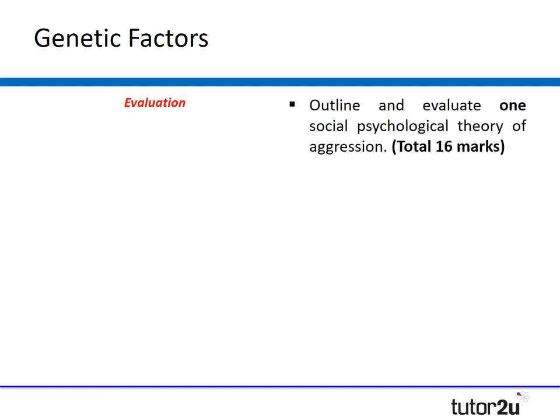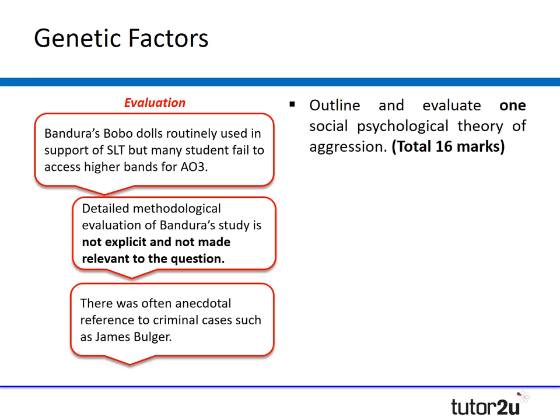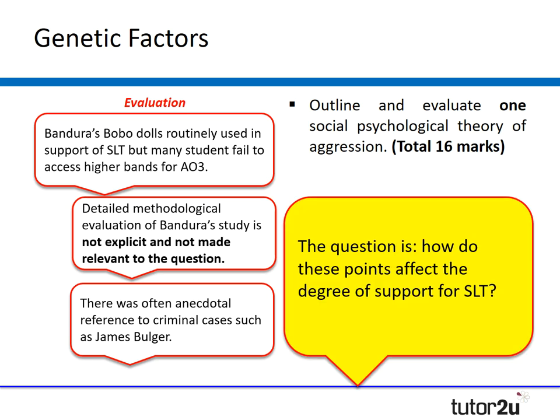The fourth question: outline and evaluate one social psychological theory of aggression. There were no issues with knowledge, but evaluation was problematic. Students used the Bobo Doll experiment to evaluate social learning theory, but spent too long describing the aim, method, results, and conclusion, when they should be saying how or why Bandura's study does or doesn't support social learning theory. They need to make an explicit link back to the question — how do the points they make in evaluation actually affect the degree of support for social learning theory?